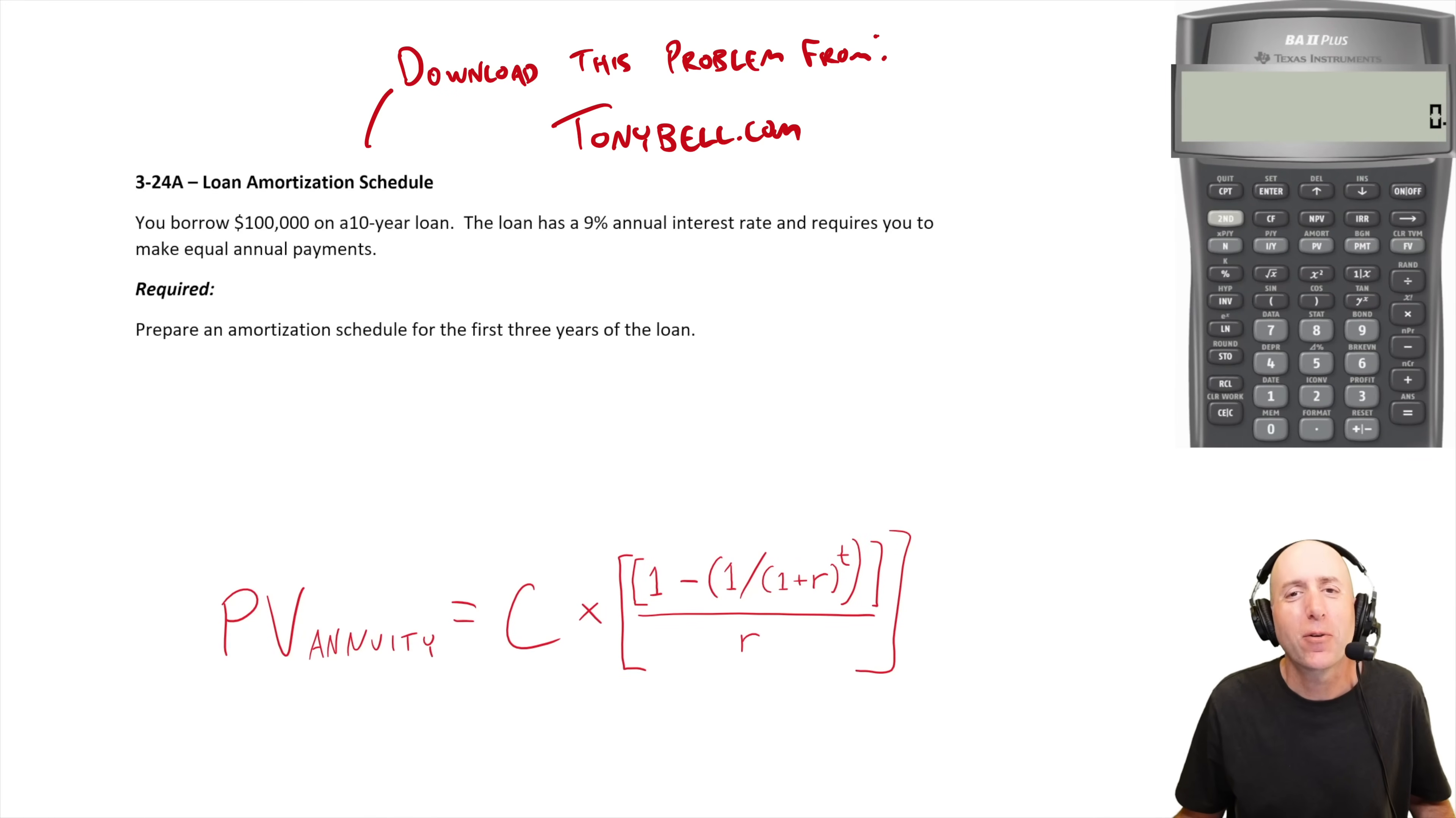Let's take a look at problem 324a, we're running through a loan amortization schedule. So let's read the question. We'll see what we're up against. I think these ones aren't too hard. If you've ever had a loan, you may have seen one of these before. You borrow a hundred thousand dollars on a 10 year loan. Loan has 9% annual interest rate and requires you to make equal annual payments.